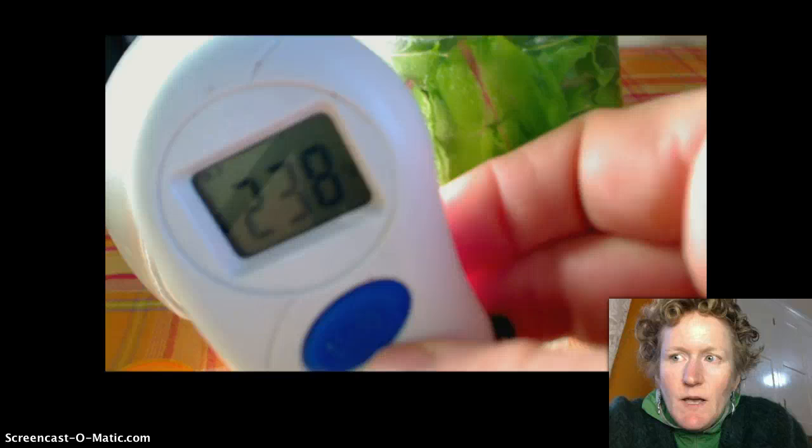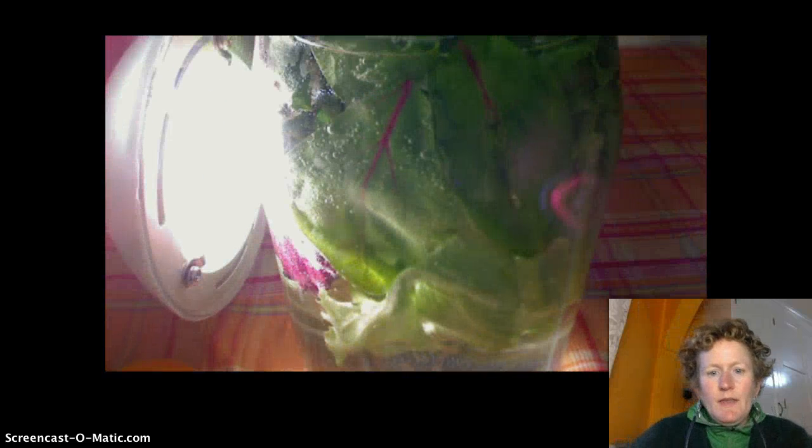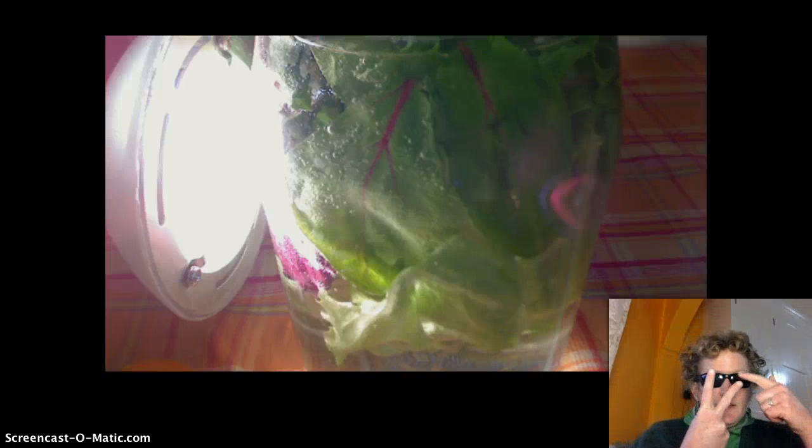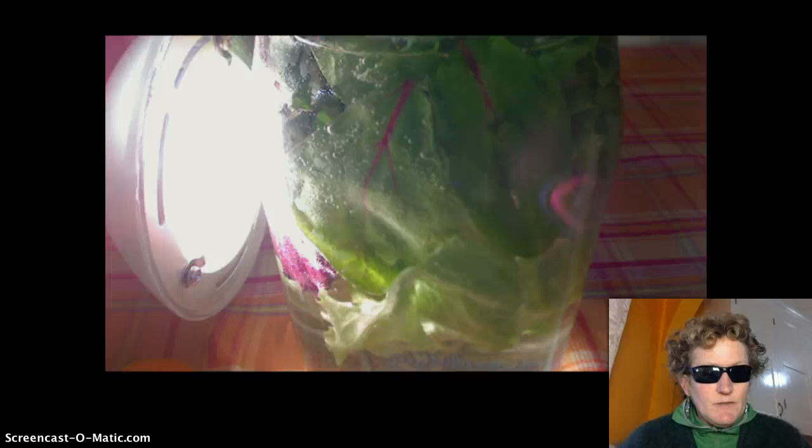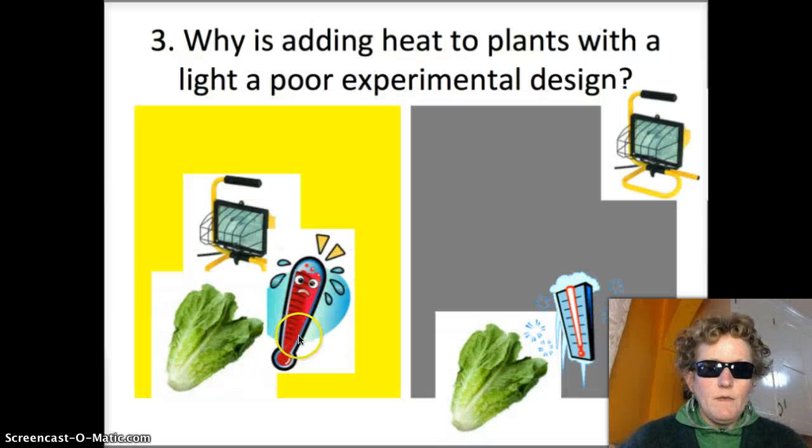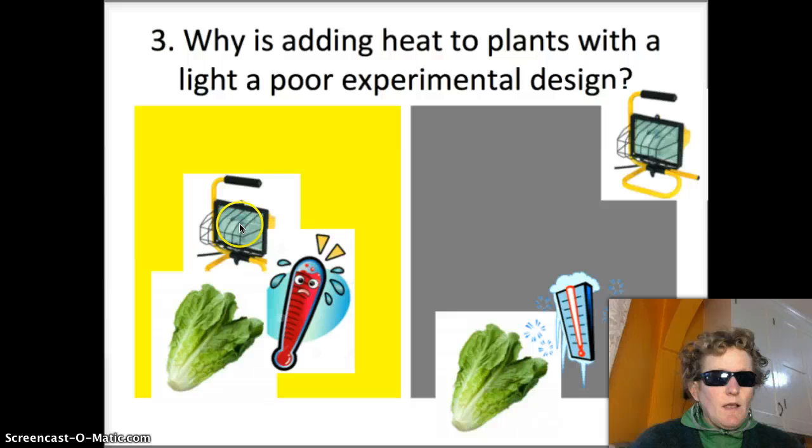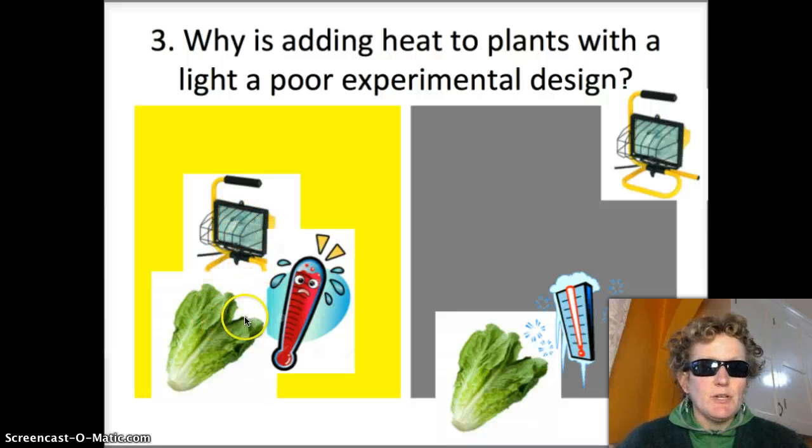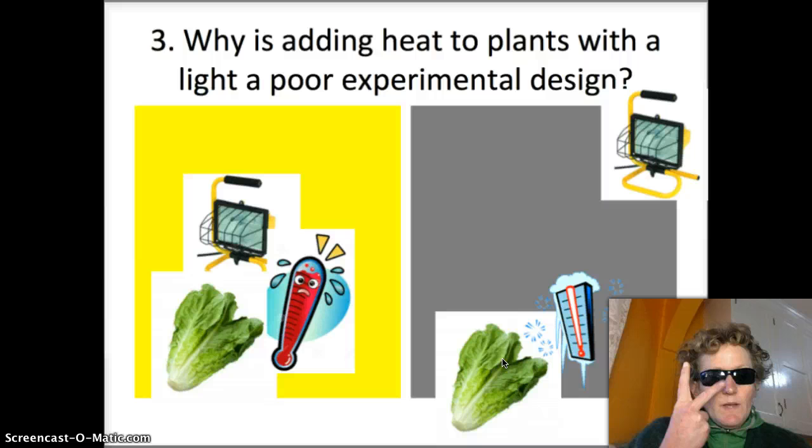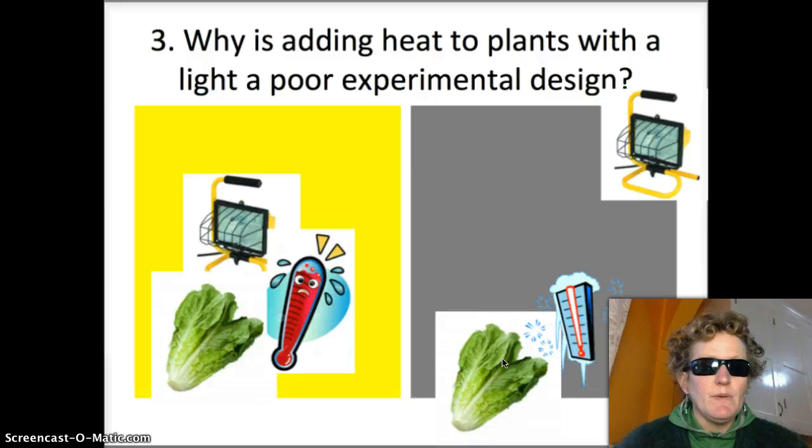So when we use a light close to a jar like that we get two variables that affect the rate of photosynthesis. We get light and heat and that's what we're going to talk about in question three. When we set the light close here to the lettuce it gets really hot. We get high light intensity and we also get a high temperature. When we put the light far away the lettuce cools down and it gets less light. So in the lesson it's a poor experimental design because they're changing two variables at once.